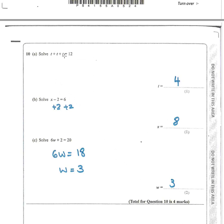Question 10: solve t + t + t + t = 12. There are 3 t's making 12, so each t is worth 4. For x minus 2 equals 6, don't take 2 away from 6 — add 2 to both sides to get x equals 8. For 6w + 2 = 20, subtract 2 from both sides to get 6w = 18, then divide by 6 to get w = 3. Check: 6 times 3 is 18, plus 2 is 20.